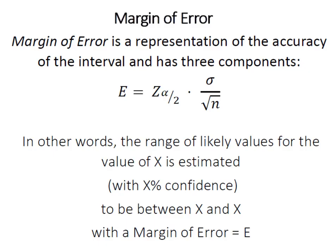So we remember that the whole point of a confidence interval is to accurately predict the actual value of a population parameter, and this margin of error is a representation of that accuracy and it has three components.